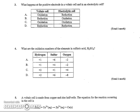Number 3 wants to know what happens at the positive electrode in a voltaic cell and an electrolytic cell. In a voltaic cell, the ions come to get electrons at the positive electrode. Positive ions come for electrons. That means it's being reduced, so either B or C is my correct answer.